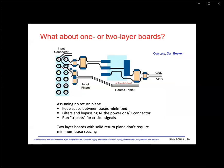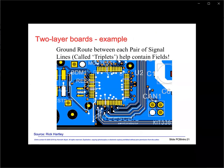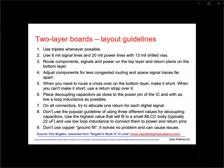Here's an example of a two-layer board with ground fill on the top layer and signals and routed power on both layers. Note that the critical data and address bus lines of this CAN transceiver are routed as triplets. Here's a handy list of guidelines for two-layer board designs by Dr. Eric Bogatin, extracted from his Bogatin's Book of Ten Lists, available on SignalIntegrityAcademy.com. I'd encourage listeners to check out his website for much more information on signal integrity, power integrity, and EMI. He's also written an excellent book on these subjects, Signal Integrity Simplified.